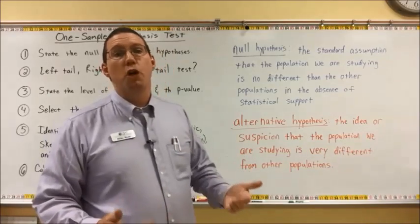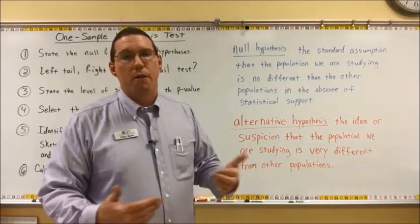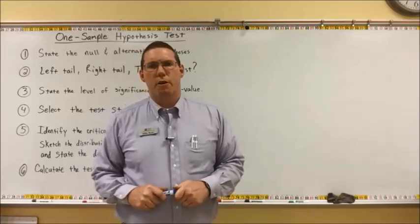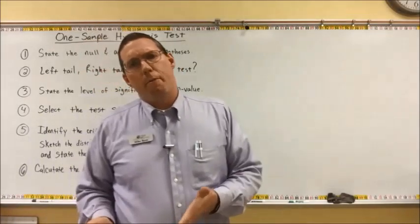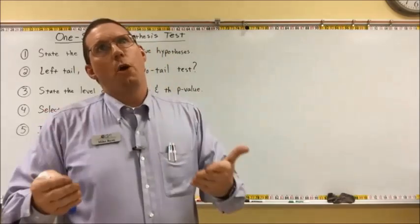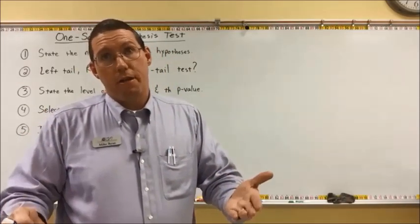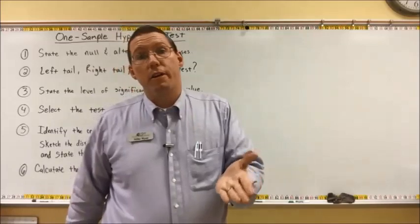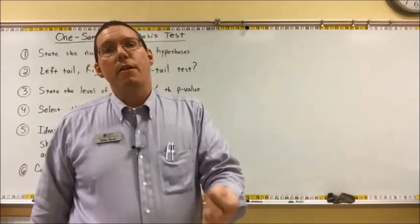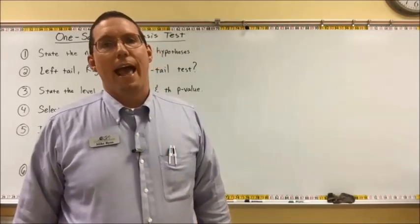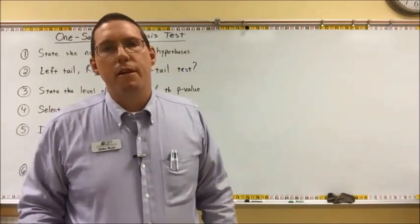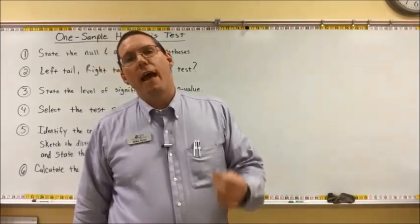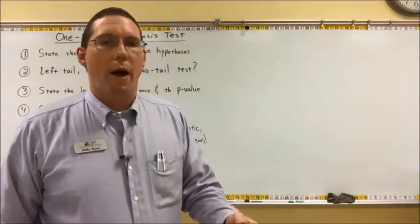The idea of stating the null and alternative hypotheses is that we have to make two separate statements. One hypothesis says there's no difference, and the other says there is a difference. Let's work with an example: the average amount of time it takes for a headache to go away when somebody takes headache medicine is 30 minutes. There's a new medicine, and they claim their medicine will make your headache go away faster — meaning in less than 30 minutes.